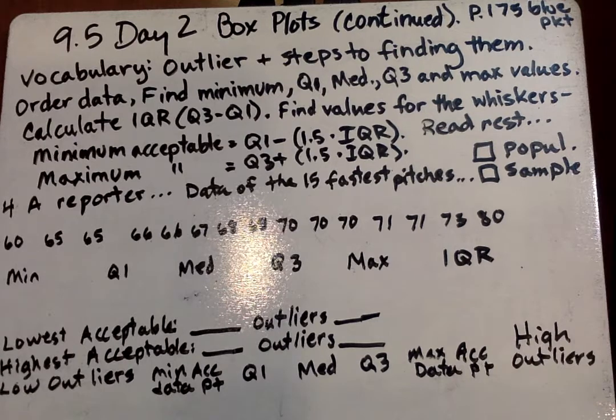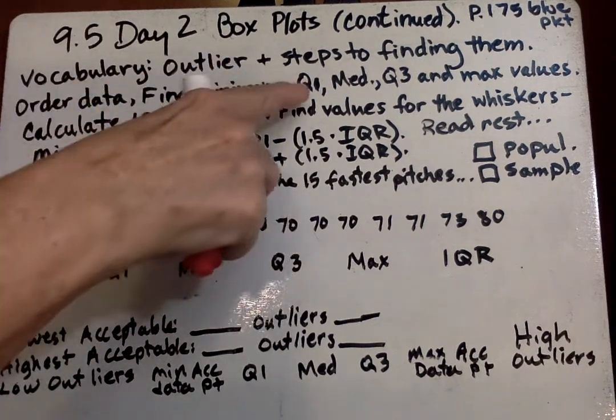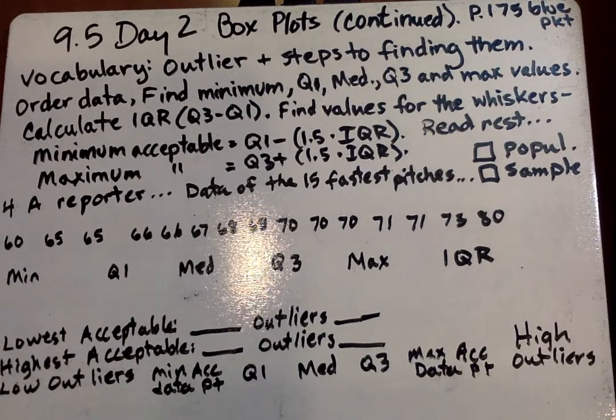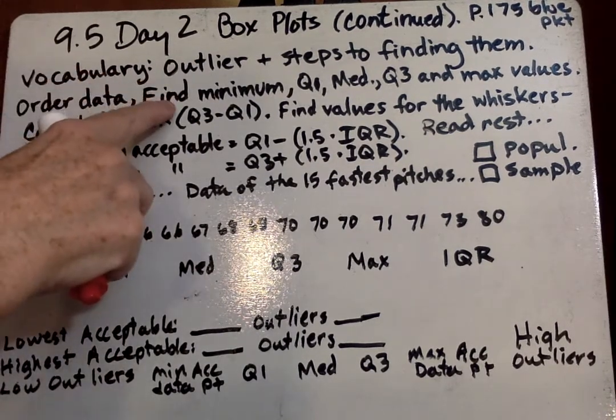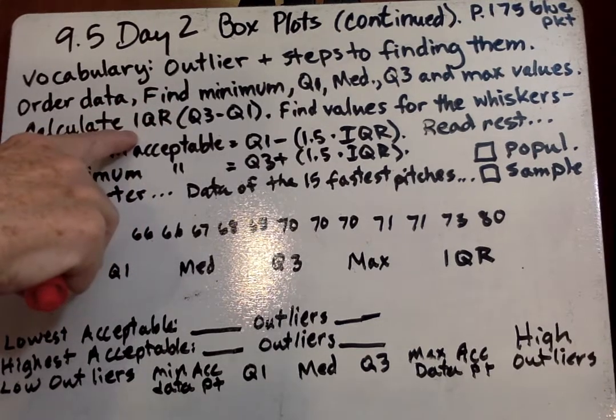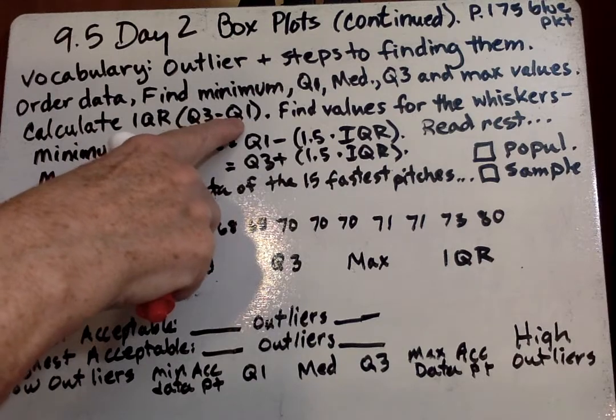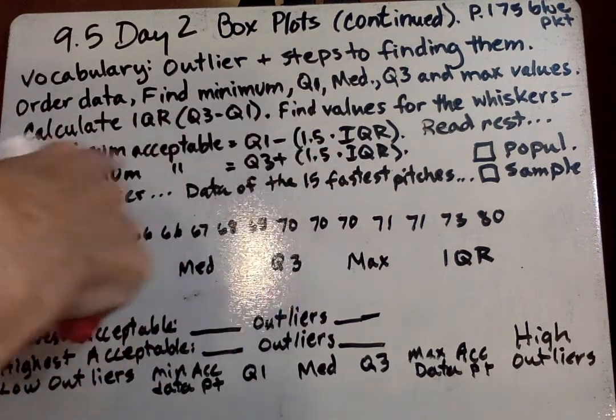So the box and whisker plots with outliers. You need to order the data, find the minimum, quartile 1, median, quartile 3, and maximum values. That's step number 2, because the first one was to order the data. Step number 3, calculate the IQR, which is quartile 3 minus quartile 1. Find the values for the whiskers, and this is how you do that.